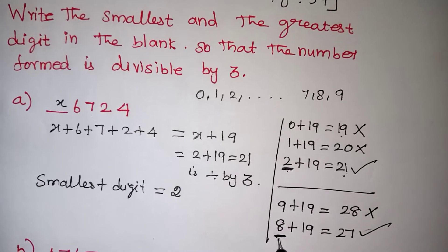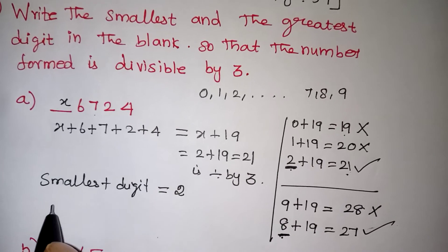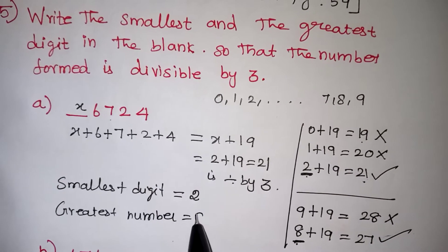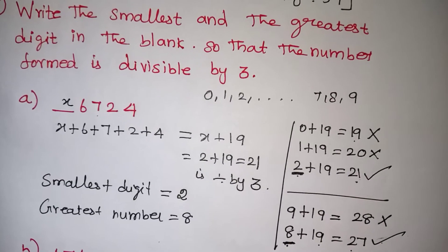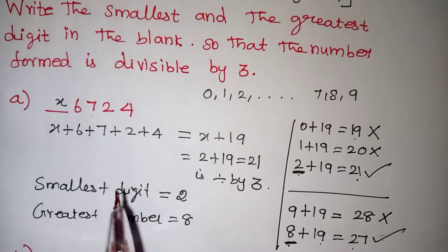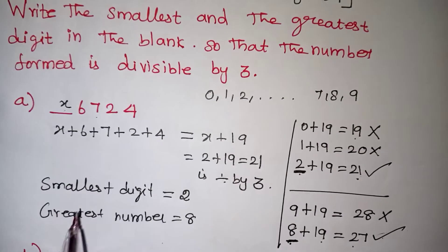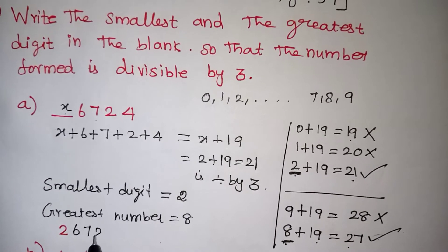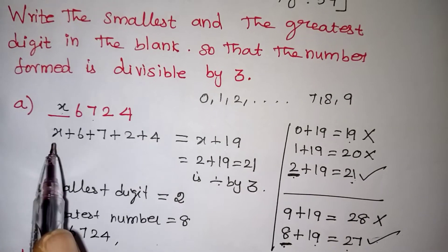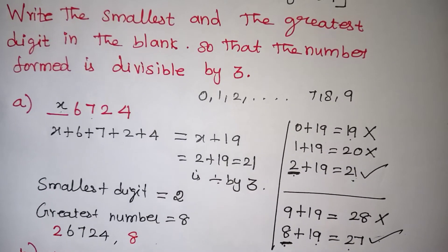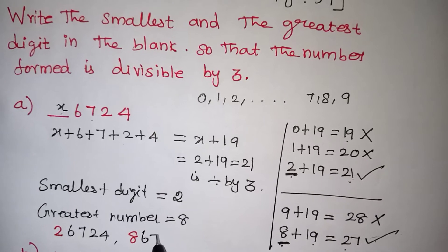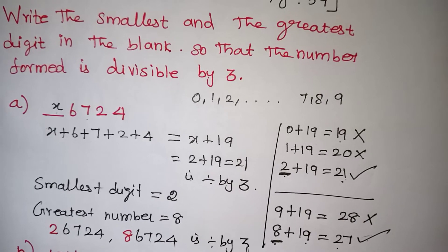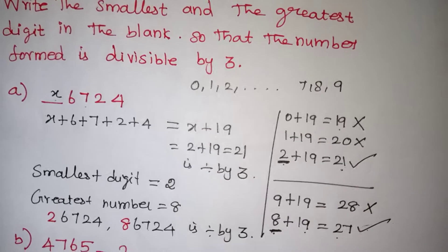So the greatest number that can be filled in this place is 8, because 8 plus 19 will give you 27 which comes in the 3 table. So the smallest digit that can be filled is 2 — making the number 2, 6, 7, 2, 4 — and the greatest digit that can be filled is 8 — making the number 8, 6, 7, 2, 4. Both these numbers are divisible by 3. This is the smallest number and this is the greatest number that can be filled.